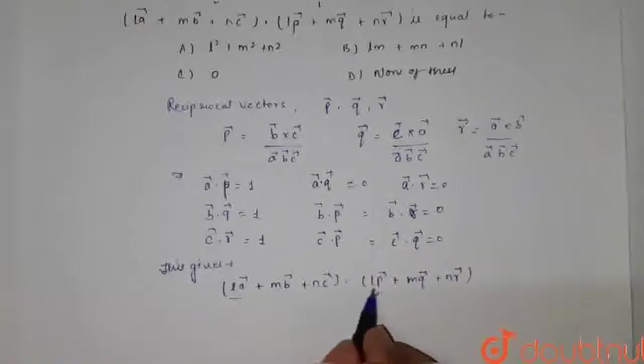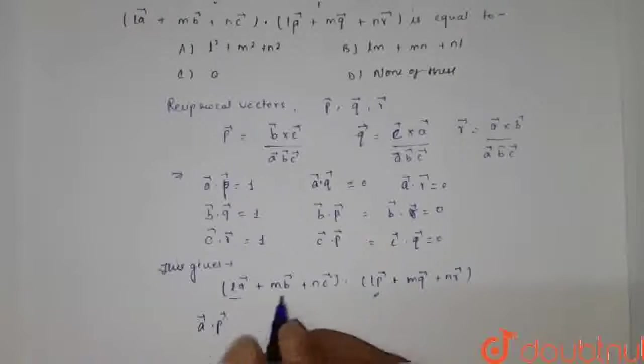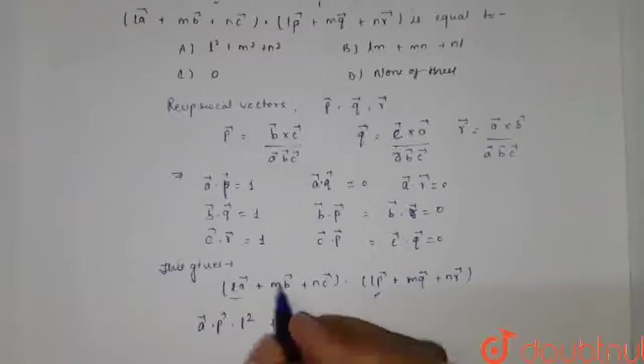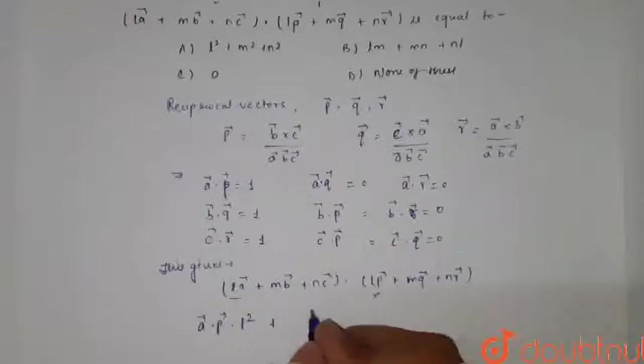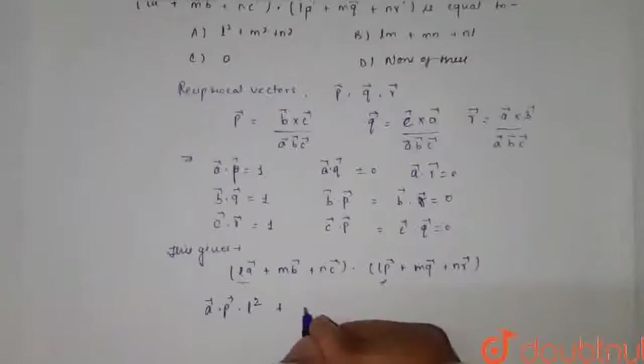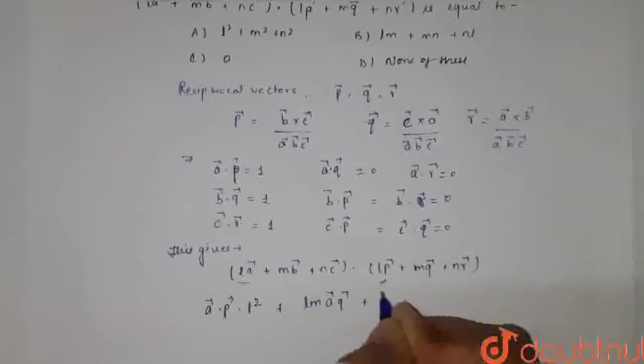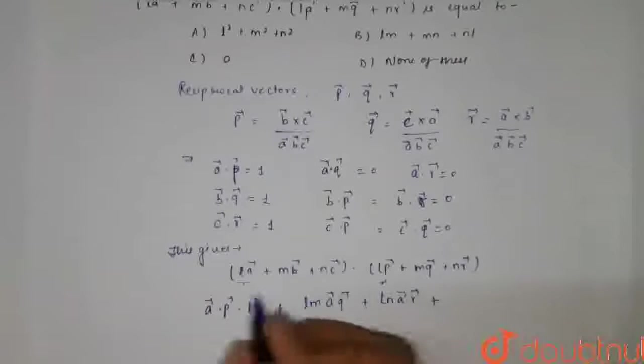So first of all, when A vector into L P vector, this goes like A vector into P vector into L square, plus this term into this, this term into this. So I am writing it L M A vector Q vector plus L N A vector R vector.